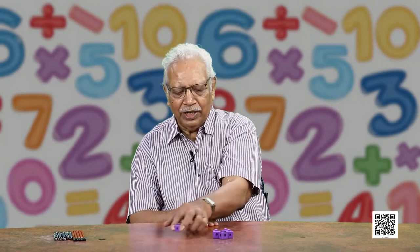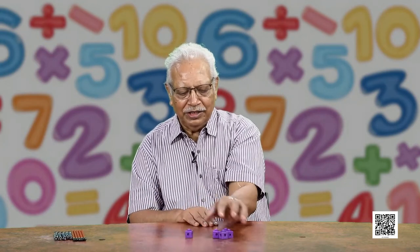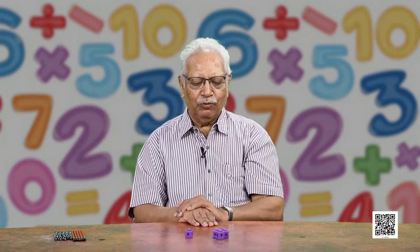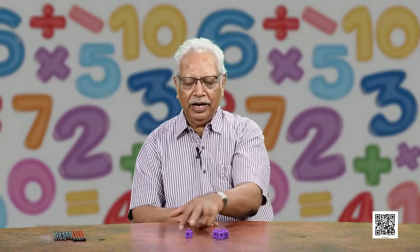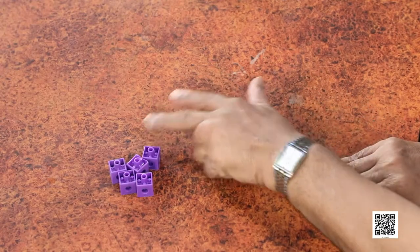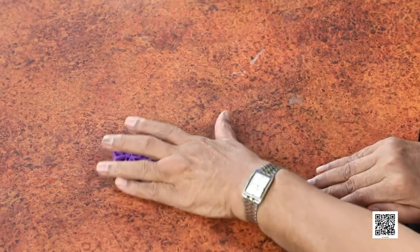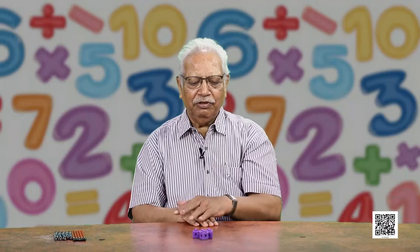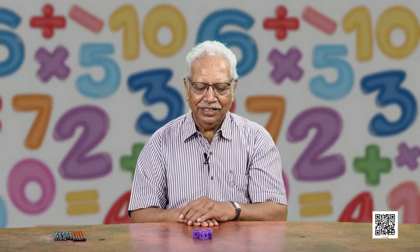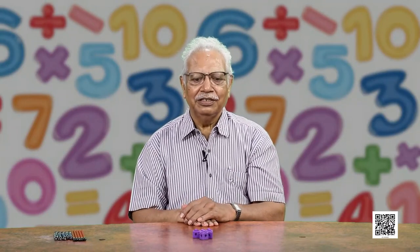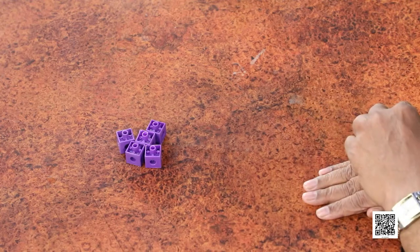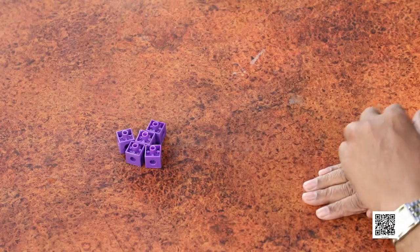Similarly, 4 and 1 — how many do they make? We will put them together and see how many they are: 1, 2, 3, 4, 5. They are 5.